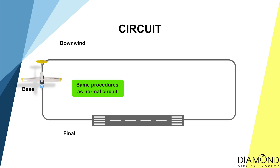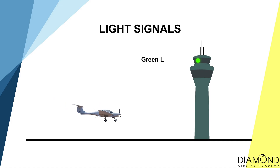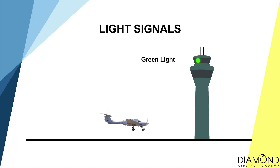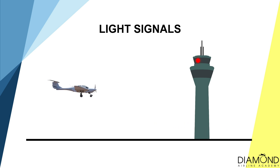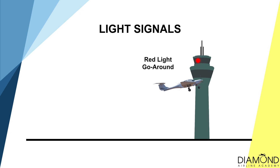Apart from different radio calls, the procedure on approach is completely the same as what you would normally do. Keep flying the aircraft and follow the circuit pattern. On short final, the tower controller will be aiming a beam of light at the aircraft, and the colour of the light signal determines the instruction from the tower. If you see a green light, it means you are cleared to land. If you see a red light, it means the runway is not clear and you have to conduct a go-around. And that is the radio failure procedure.